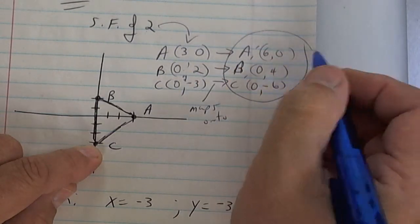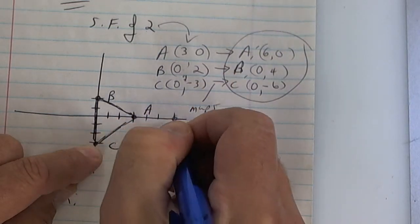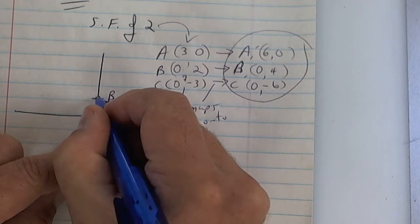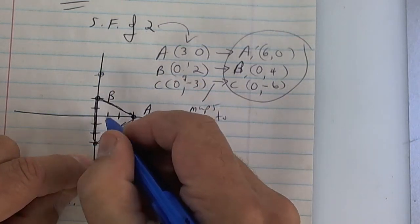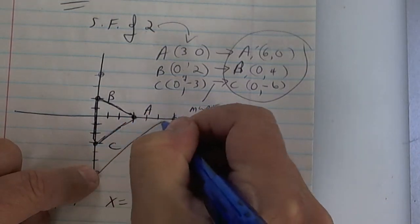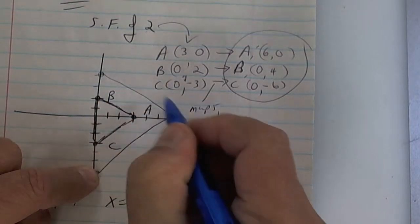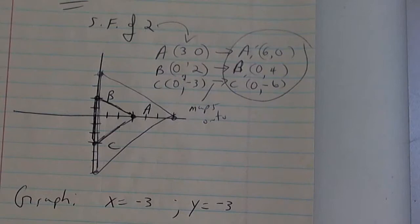If you graph this one, you're going to go over six, one two three four five six, up zero. Over zero, up one two three four. Then over zero, down six, one two three four five six. What you should have is an image exactly twice as big as the original, and it is. That's called a scale factor and that's called an enlargement.